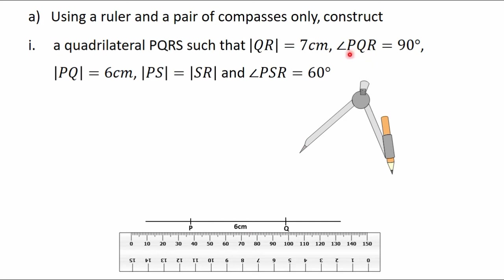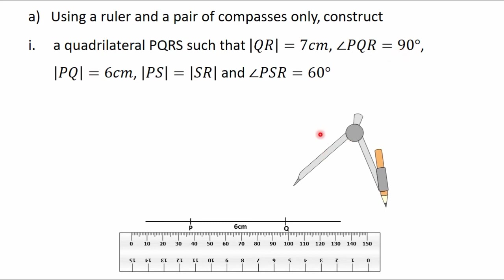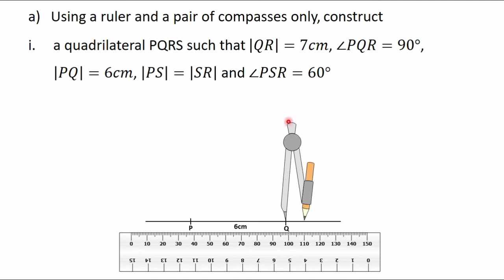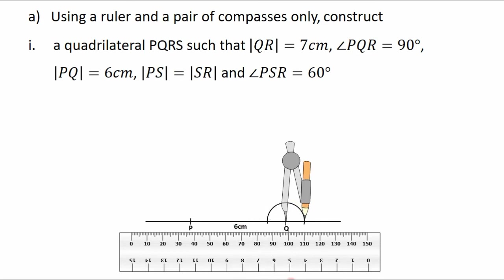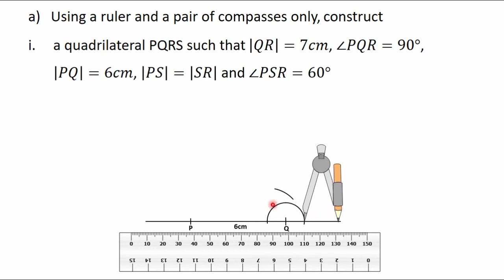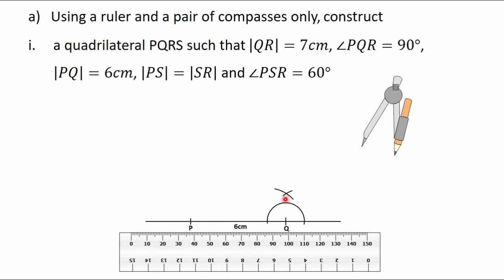Next we construct the 90 degree angle at point Q. Put the needle of the compass on point Q and adjust it to a reasonable radius, then construct a semicircle on line PQ. Move the needle to the arc's intersection point, adjust the compass slightly, and construct an arc. With the same radius, move the needle to the next point and construct another arc to intersect the first. Draw a straight line from point Q through the intersection of the two arcs to obtain the 90 degree angle.